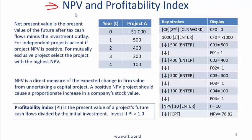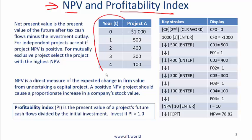This is the most important concept in my opinion in this reading: net present value, and related to NPV is the profitability index. NPV is the present value of the future after-tax cash flows minus the investment outlay. Just understand the concept — NPV means you have a negative cash flow initially (that's your cost) and then you consider the present value of all future cash flows. If you have a cash flow like this, use the calculator — make sure you do this enough times that it is second nature.